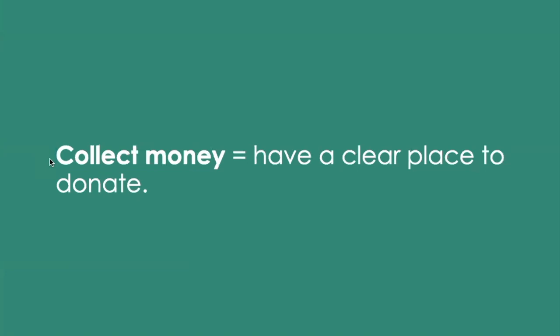Number five: collect money. Have a clear place to donate. You don't have to be salesy or put a thermometer on there — just make it very clear. The guy I work with at Crosswinds, Bob Walder, has told me for years: put a big yellow donate button at the top of the website. That's it. No sales pitch. Just make it easy. People aren't surprised that churches and nonprofits collect money, so make it super simple to find.